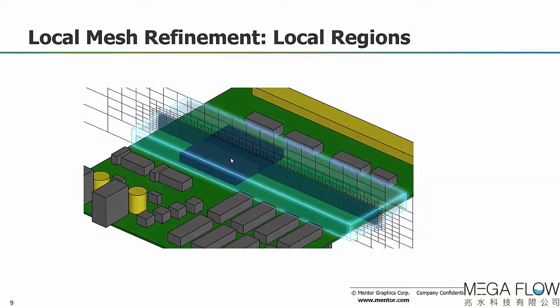The other mesh control is called local regions. Flowtherm XT has a region smart part that allows assigning mesh controls affecting the size of mesh in the fluid, the solid, or partial cells. In this example, fluid cells of a specified size are set everywhere within the bounds of that region. The region can be any arbitrary shape and can contain multiple objects — it's used to control the mesh in or away from geometry.